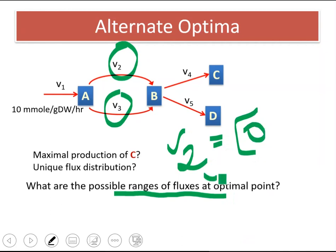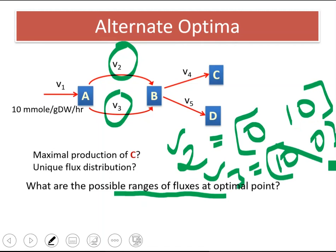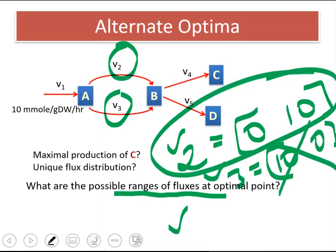And in this case, V3 will have a value of 10. So both V2 can change between 0 and 10, and V3 can change between 0 and 10 among those optimal solutions.